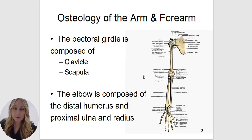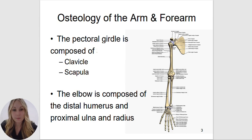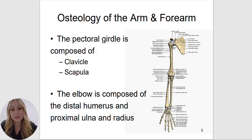The elbow is composed of the distal humerus and the proximal ulna and radius. This area is considered your arm, whereas this area would be considered your forearm. Your forearm is made up of the ulna and the radius. The humerus is considered your arm, or it can also be called your brachium. You'll see a couple of muscles called brachialis and coracobrachialis, indicating they attach somewhere on the humerus.